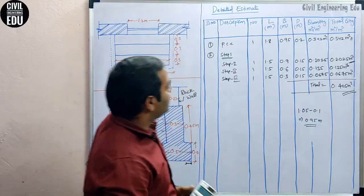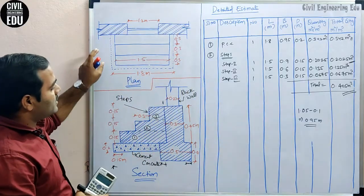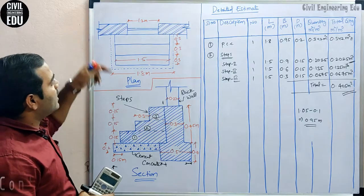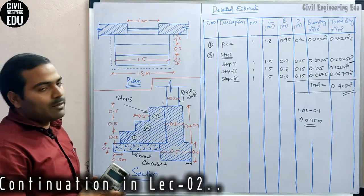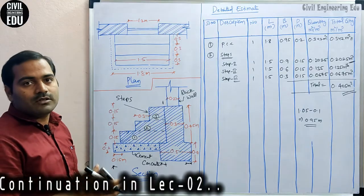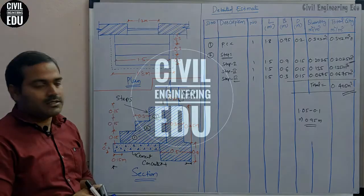This is how we calculate for this plan and section. We will now take another type of plan and do the calculation for that as well.